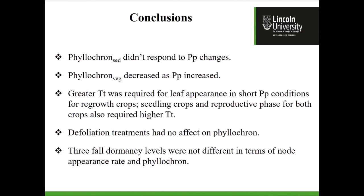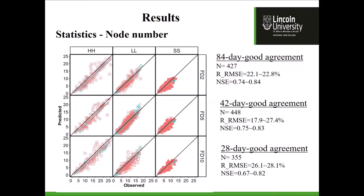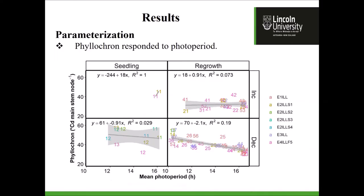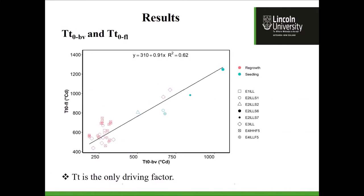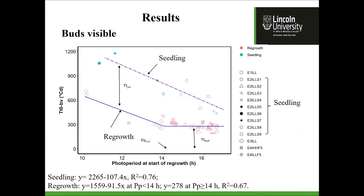An important clarification: the photo period effect on the number of nodes to first flower is captured in the time to bud visible. From bud visible to flowering, thermal time was constant — the differences based on photoperiod were captured in the bud visible timing. Looking at the graph, the regrowth crop at a short photoperiod shows a target of about 600 thermal units, which is longer in the early spring period. Once photoperiod reaches about 14 hours, the target becomes about the same. That is where the photoperiod effect on node number to first flower is captured.